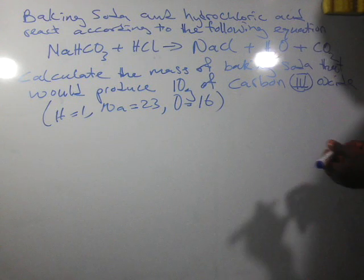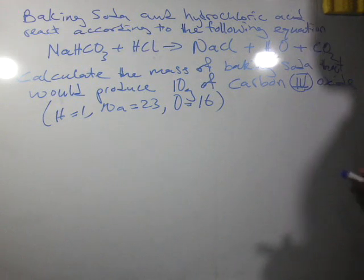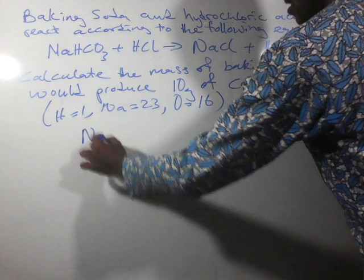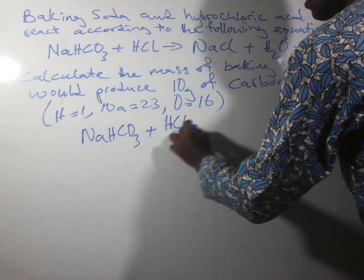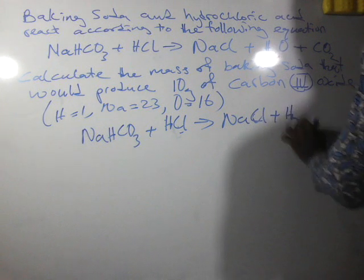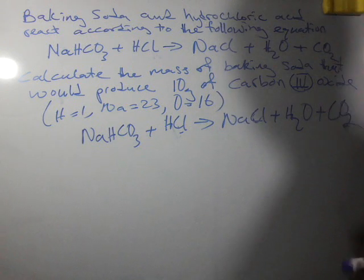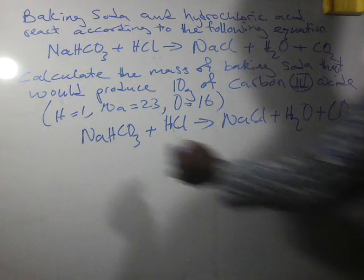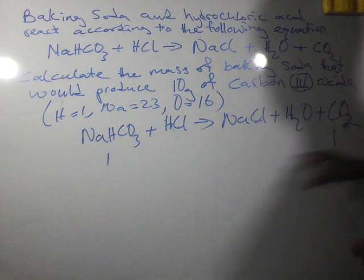Looking at the question carefully, we look at the ratio of their combination. We have sodium hydrogen carbonate and carbon dioxide, and we find that the ratio is one to one. That means one mole of sodium hydrogen carbonate will produce one mole of carbon dioxide.